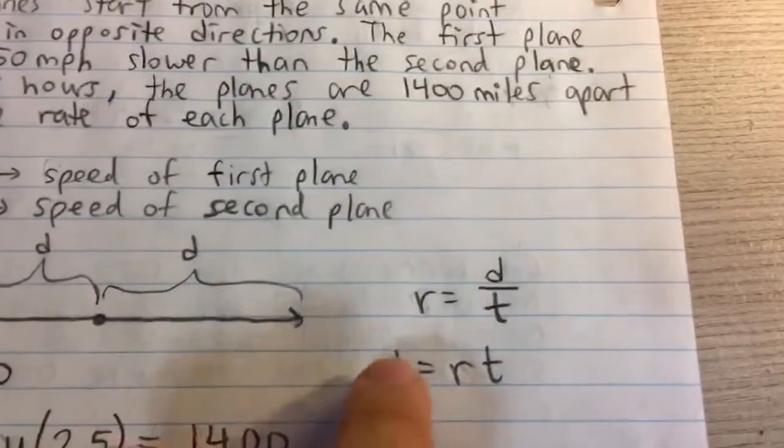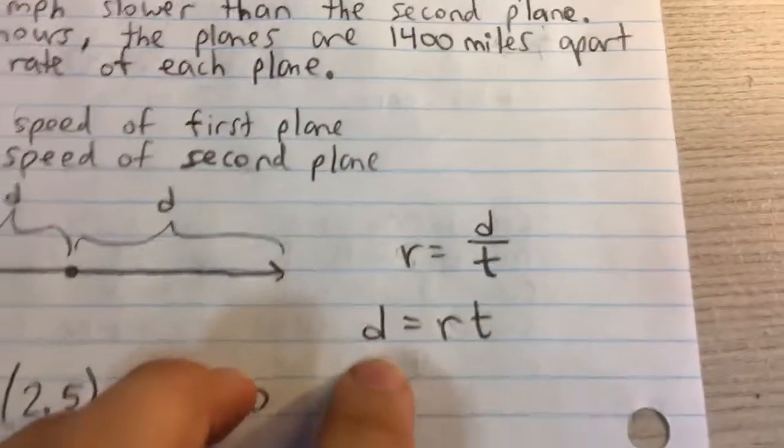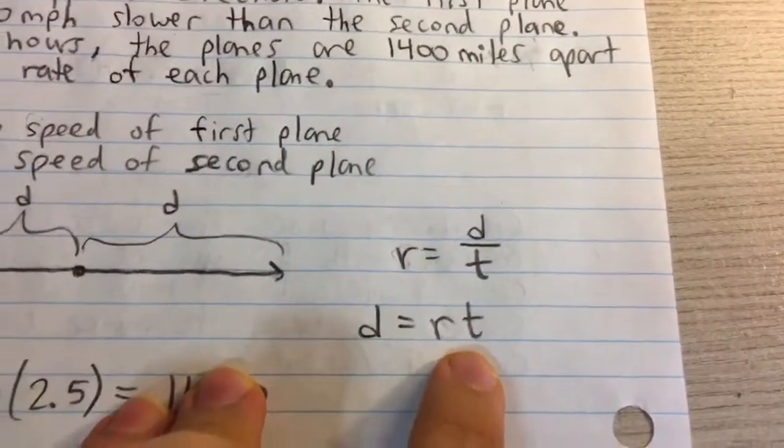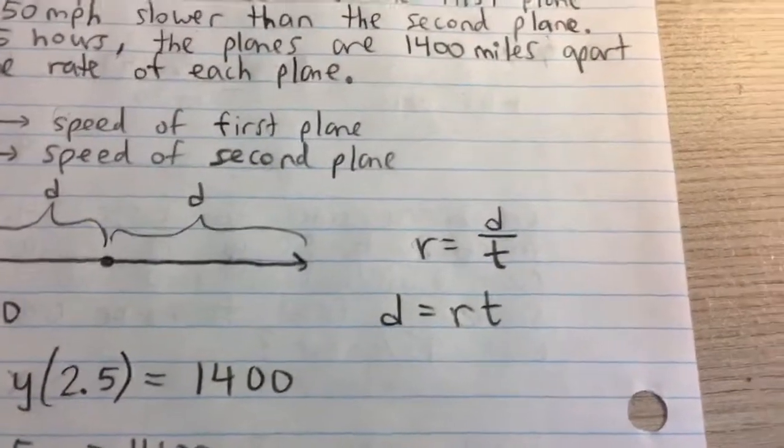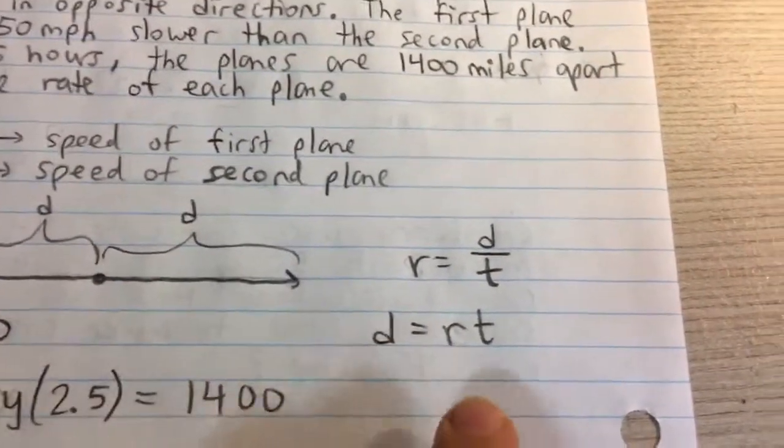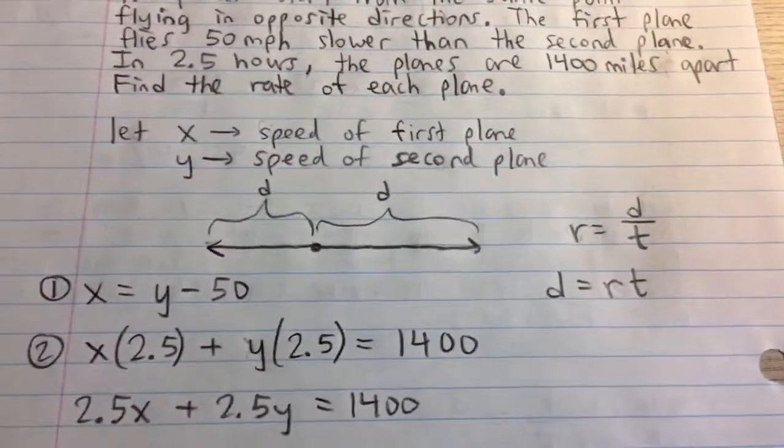And if we know that the rate or the speed is equal to distance over time, if we solve for distance, that's rate times time by multiplying time on both sides of the equation. So if we take the rate times time of the first plane plus the rate times time of the second plane, that will be equal to 1,400.